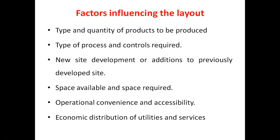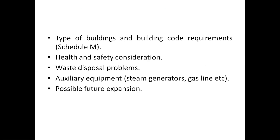The major factors influencing the layout are: the type and quantity of products to be produced; the type of process and controls required; new site development or additions to previously developed sites; space available and space required; operational convenience and accessibility; economic distribution of utilities; the type of building and building code requirements as per Schedule M; health and safety considerations; waste disposal; auxiliary equipment such as steam generators and gas lines; and possible future expansion.